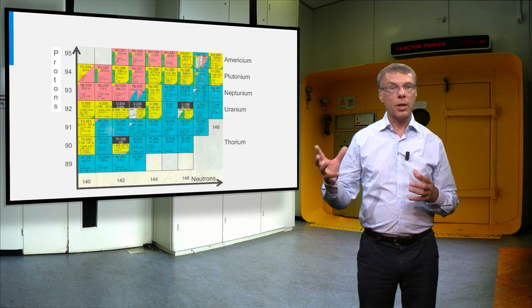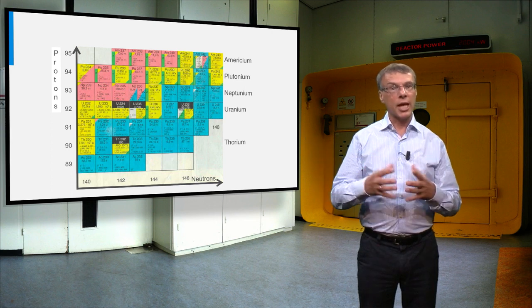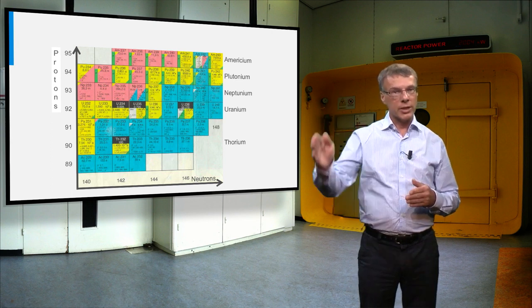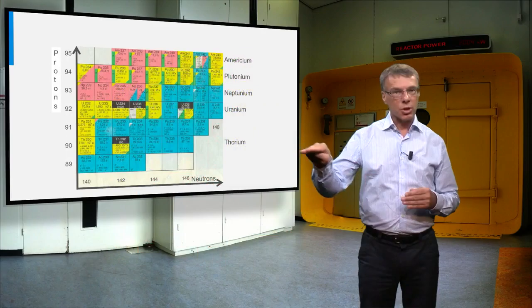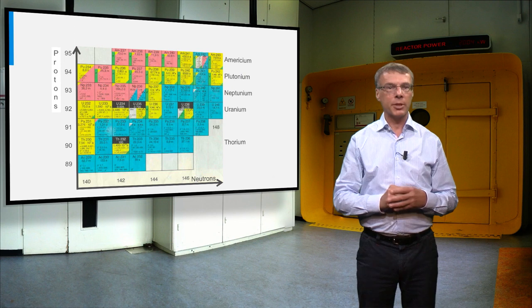Let's first look at a part of the nuclide chart containing the actinides. Along the vertical axis I have plotted the number of protons in the nucleus, and along the horizontal axis the number of neutrons.